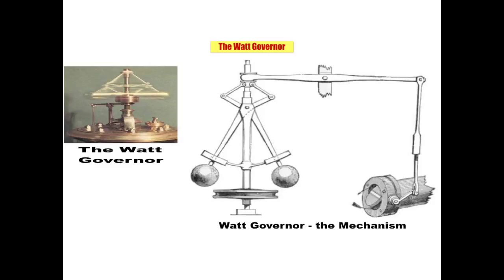The answer was the watt governor. It's connected to the throttle valve and regulates the flow of steam to the engine. As the speed of the engine increases, the central spindle of the governor rotates faster, making the balls fly outwards and upwards against gravity. This motion causes the lever arms to reduce the opening of the throttle valve, thus decreasing the flow of steam and preventing over-speeding of the engine. In this way, the governor keeps speed smooth and constant.